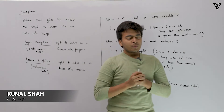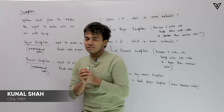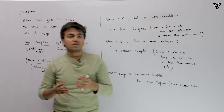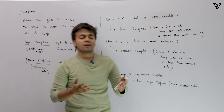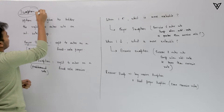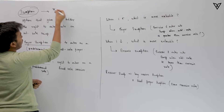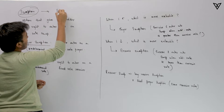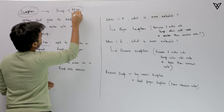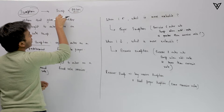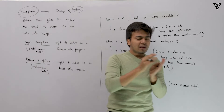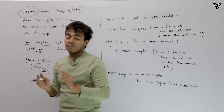Before we jump to option Greeks, there's one really interesting derivative contract which we all need to understand. It's an OTC contract, not something you'll find over the exchange, but it is worth understanding — which is swaption. It is a combination of both swap and option, so you get an option to enter into a swap or not.